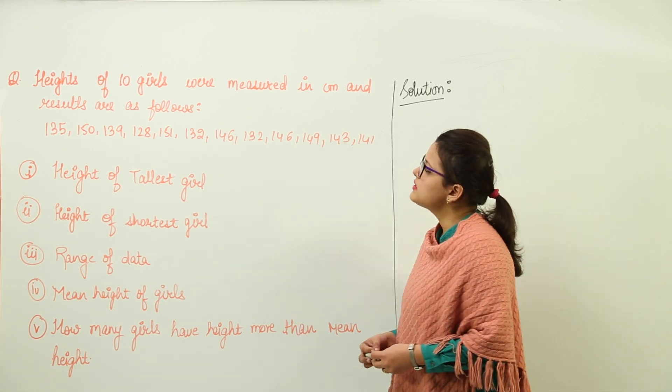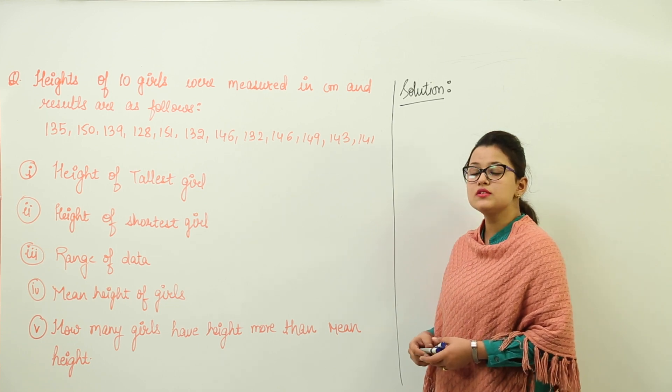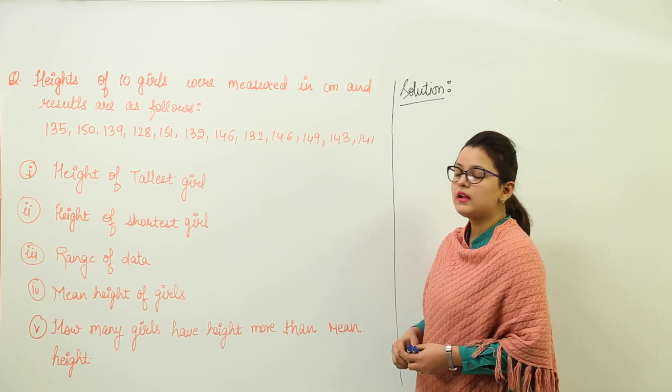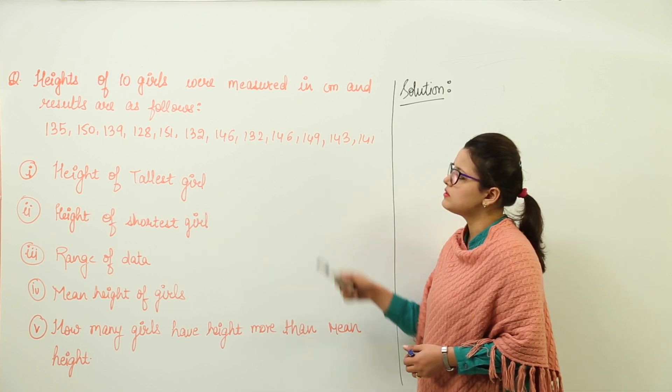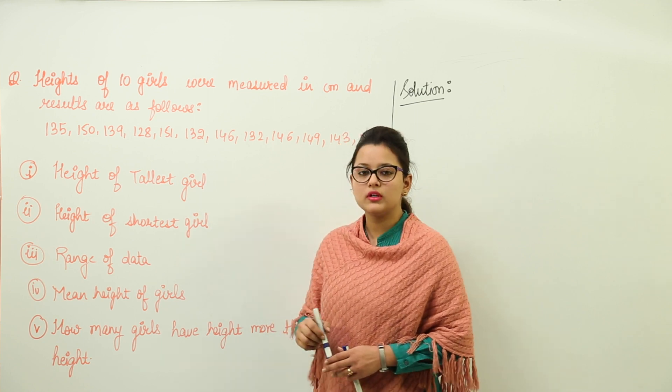The question is, heights of 10 girls were measured in centimeters and the results are as follows. So these are the heights of 10 girls in centimeters. The question first is saying you have to tell the height of the tallest girl.